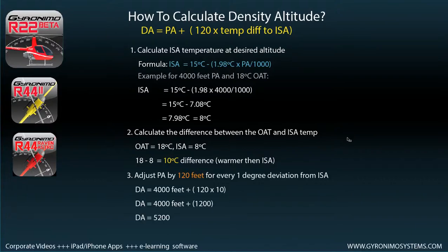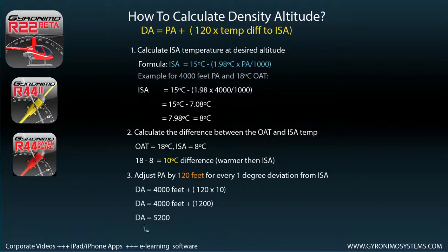Third and last step: adjust the pressure altitude by 120 feet for every one degree deviation from ISA. We have 10 degrees difference, so 120 feet times 10 is 1,200 feet. Just add that to the 4,000 feet and you end up with 5,200 feet. That is our density altitude — 5,200. That wasn't too hard!